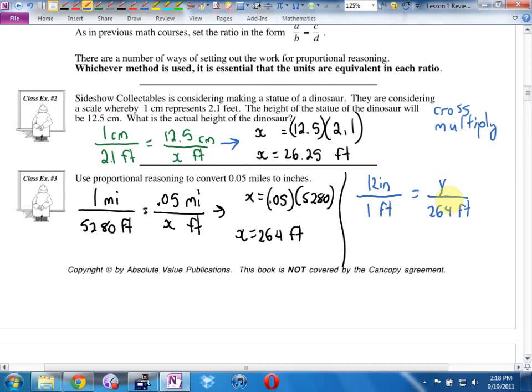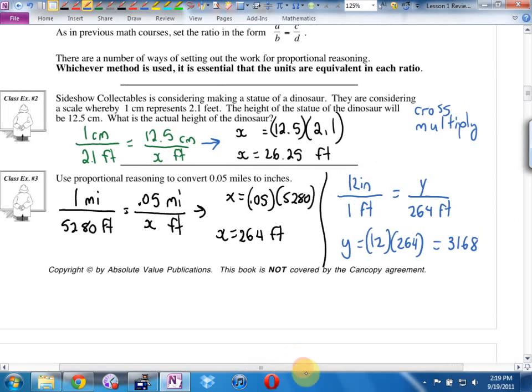Cross multiply again. We're going to get y times 1. Plain old y equals 12. And now we're answering your question. You were saying, do we divide or multiply? What do we do? Multiply by 12 or divide by 12? It comes out of the equation. It looks like I'm going to multiply by 12. Otherwise, that 12 would be on the bottom here, wouldn't it? What is 12 times 264? 3,168. And that's going to be inches.